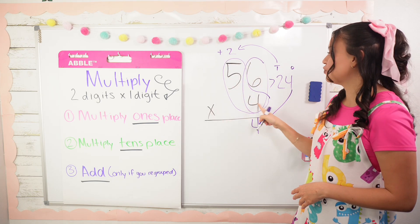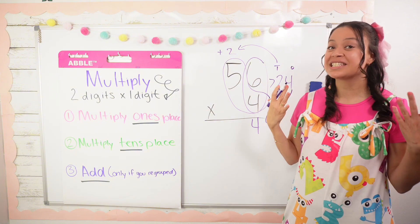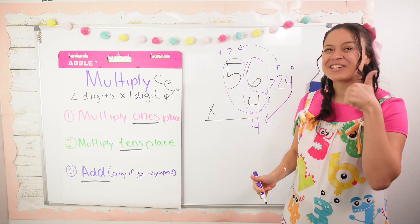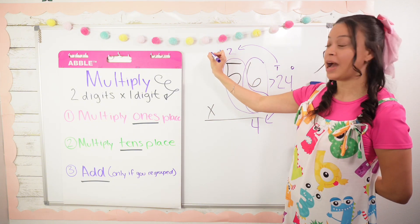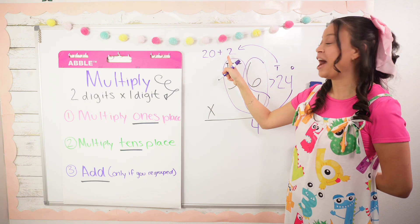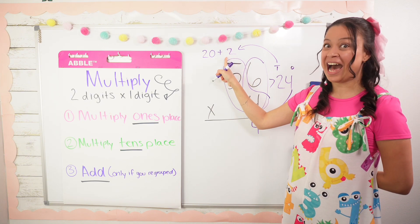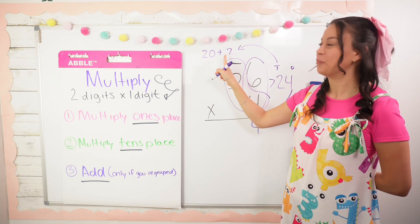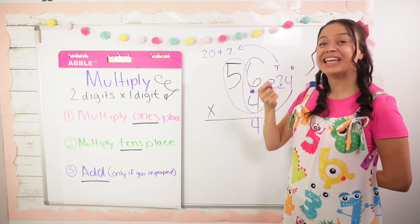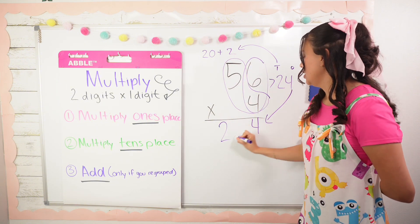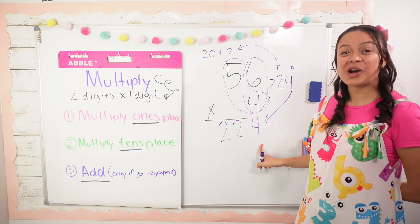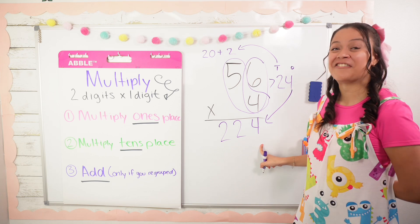Step two: multiply the tens place — second butterfly wing. 5 times 4 is 20. I'll write 20 up here, then add the regrouped plus 2: 20 plus 2 is 22. So our answer is 224.